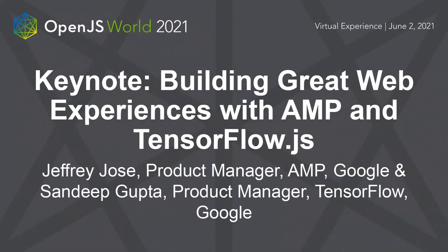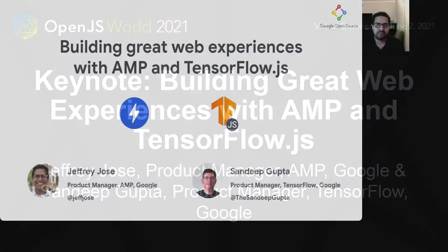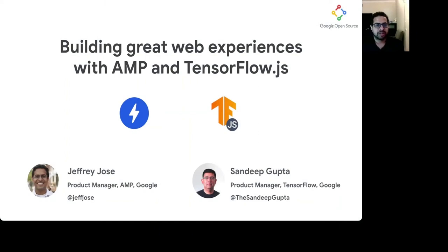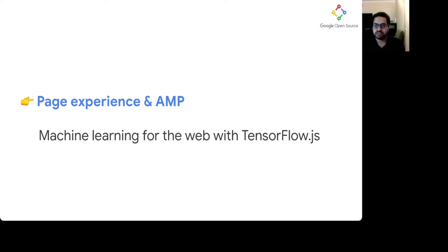Hi, my name is Jeffrey. I'm a product manager at Google working on AMP. And I'm joined by Sandeep Gupta, a product manager on TensorFlow.js at Google. Our keynote is divided into two sections. First, we'll take a look at how the page experience and AMP works together. And then Sandeep will walk us through using TensorFlow.js to harness the power of machine learning to build novel experiences for the web.